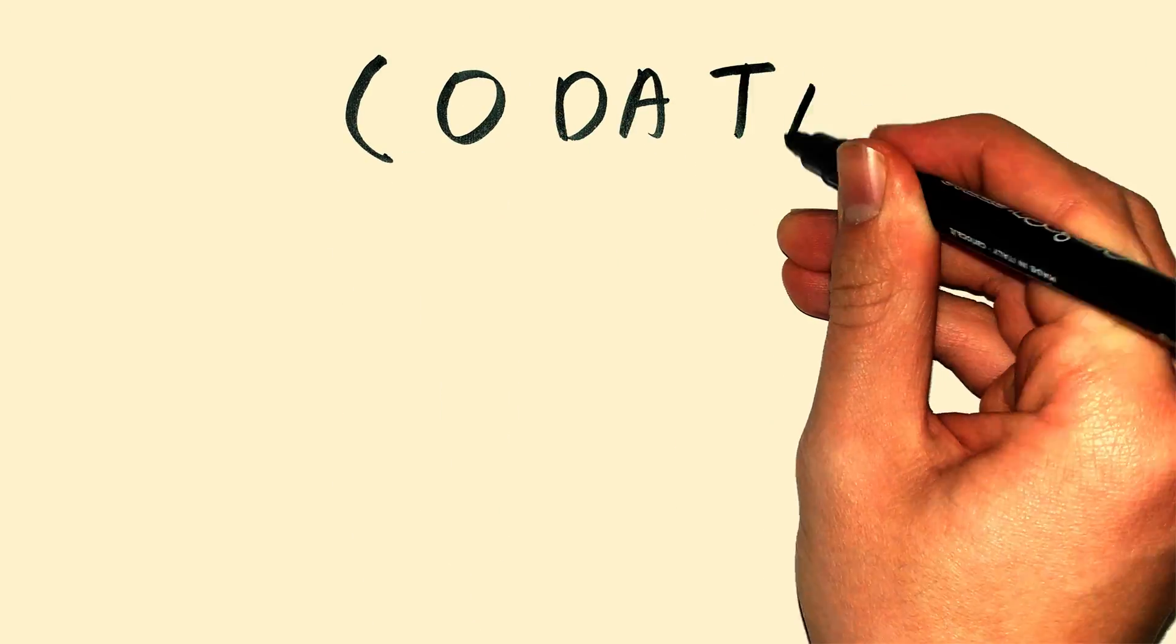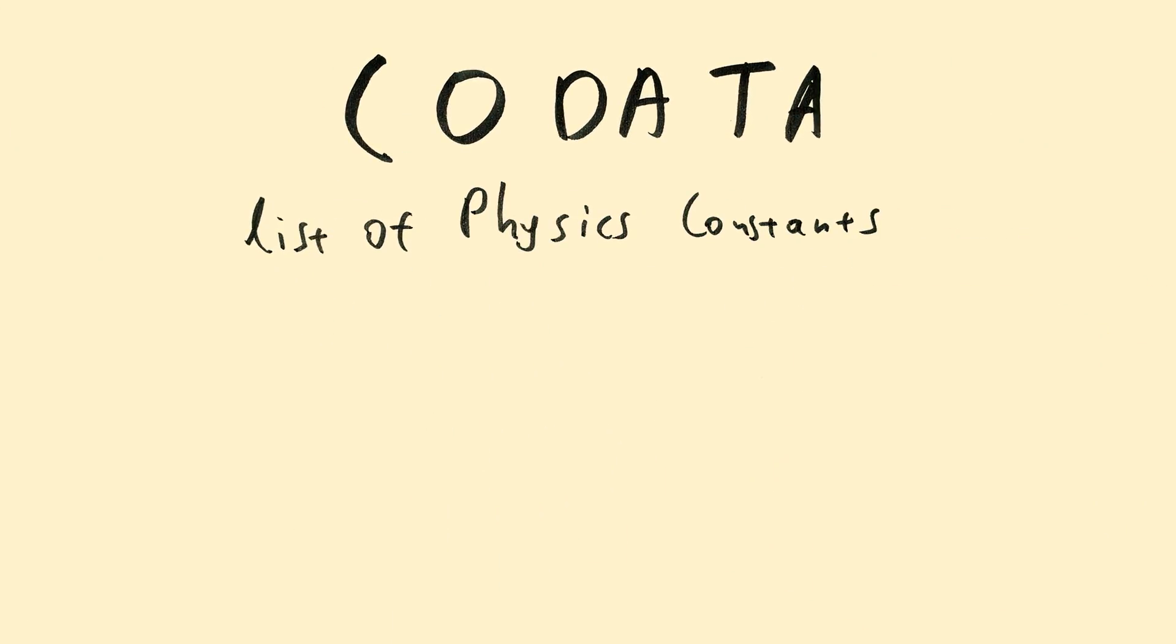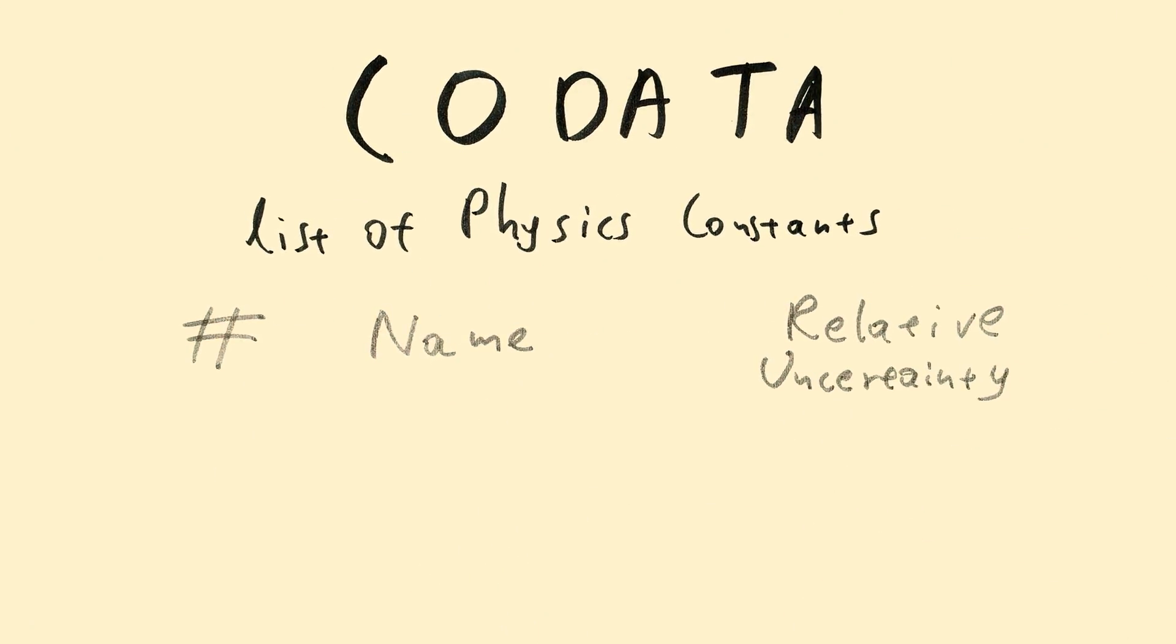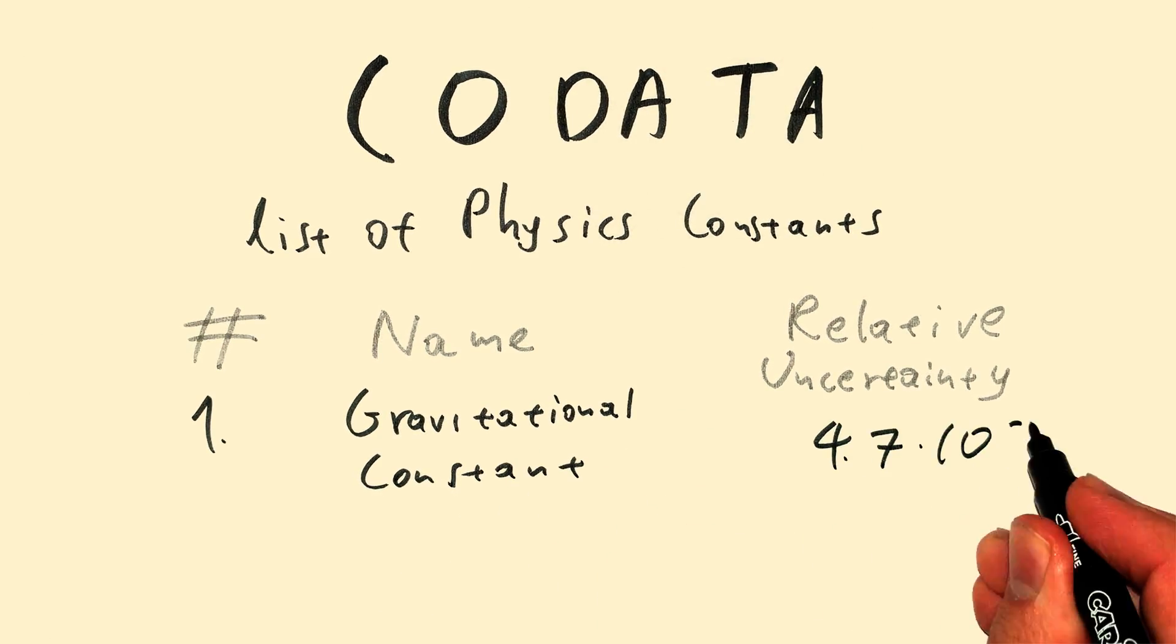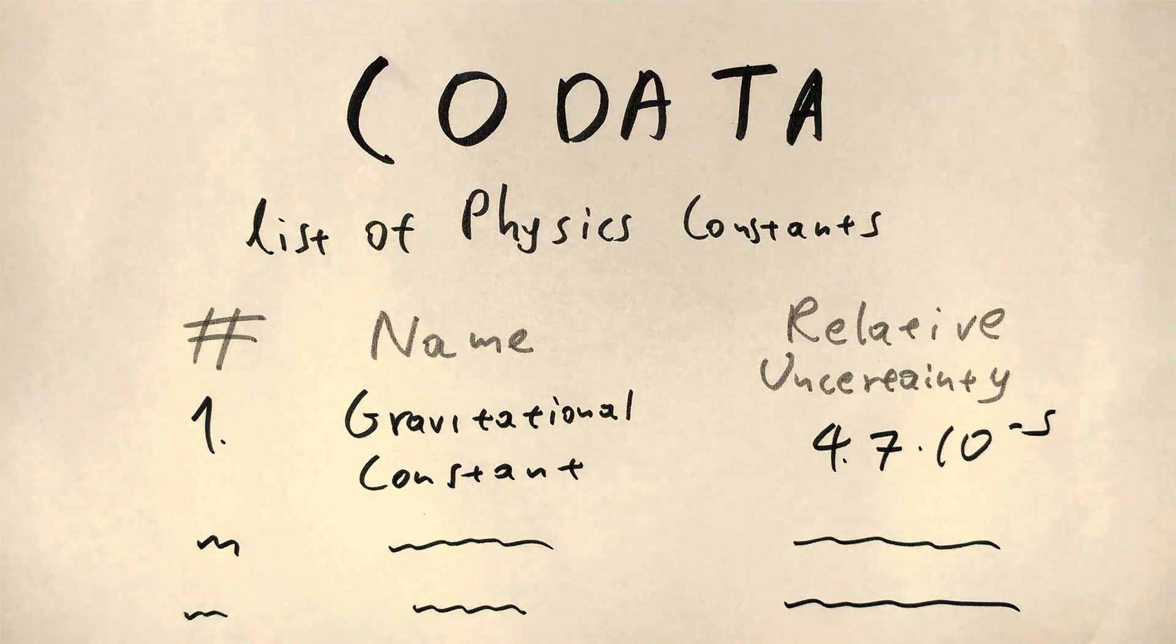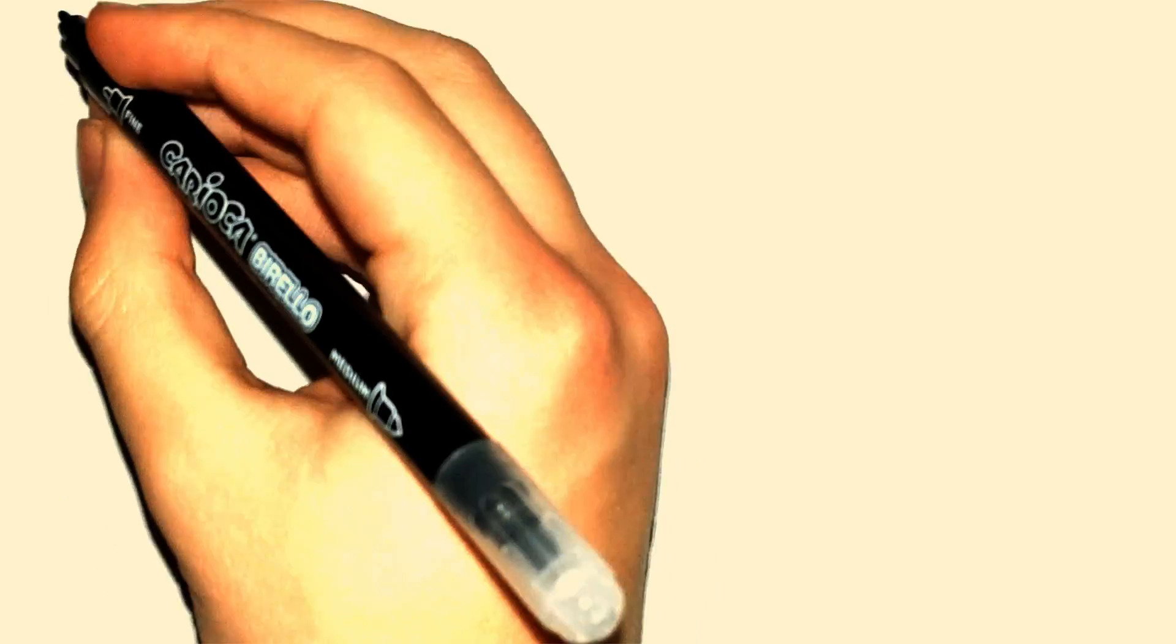That's too big of an uncertainty for a number like G. In fact, in the CODATA list of physics constants, G has the highest relative uncertainty of all. But there are two good reasons behind it.